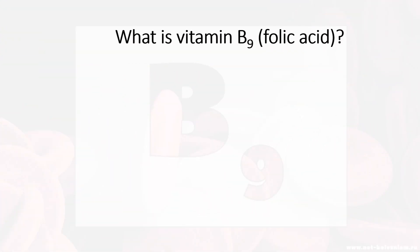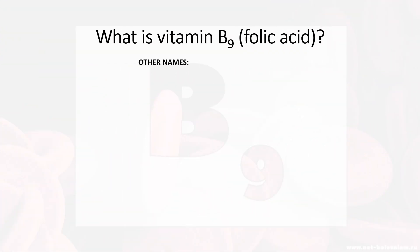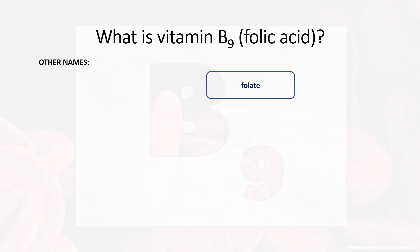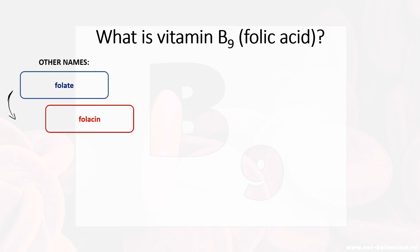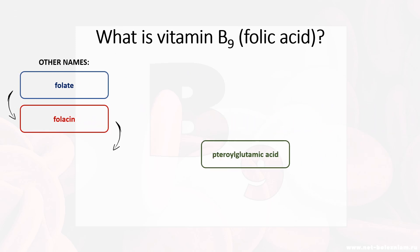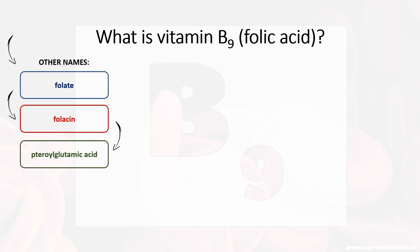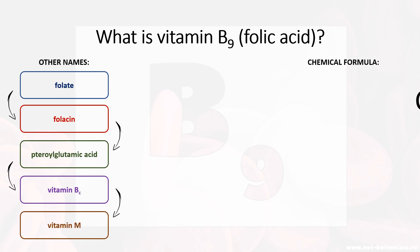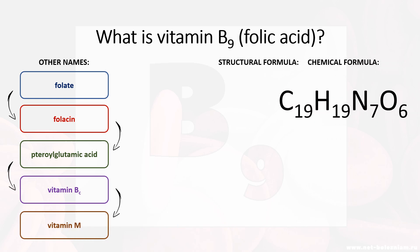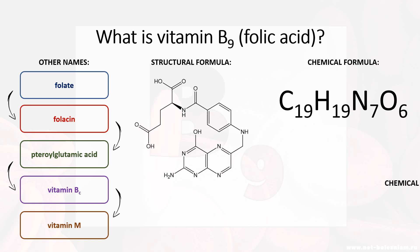What is Vitamin B9, Folic Acid? Other names for this vitamin are folate, folacine, pteroeglutamic acid, vitamin BC, vitamin M. Chemical name: N4-2-amino-4-hydroxy-6-pteridyl-methylaminobenzoyl-L-glutamic acid.